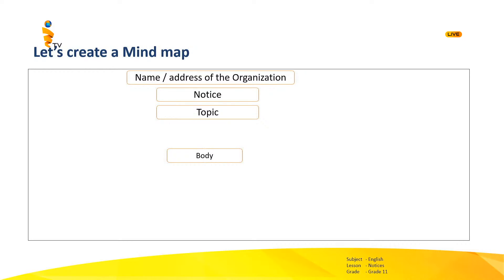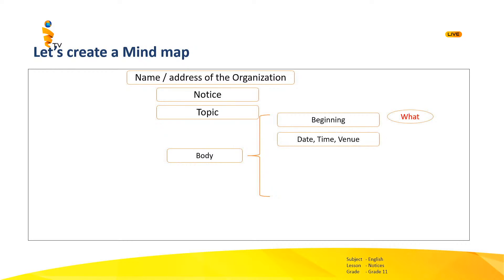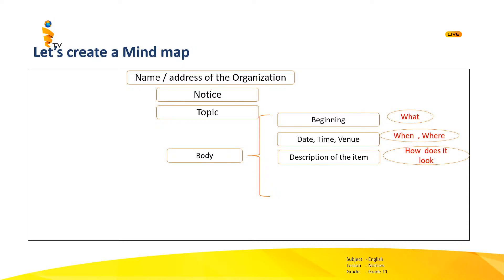Can you remember the parts of the body? The first one is the beginning — it addresses the question word 'what'. Next, date, time and place should be mentioned — it answers the question 'when and where'. After that, we have to write the description of the item, which answers the question 'how does it look?'.